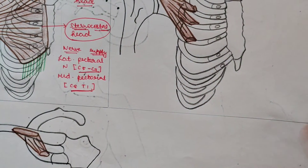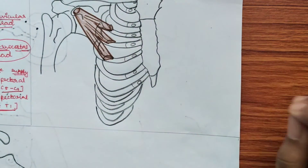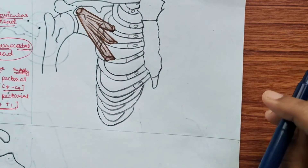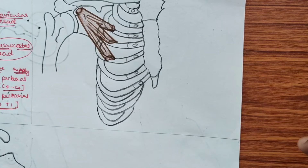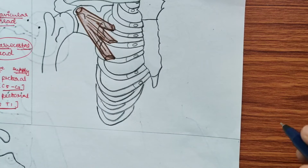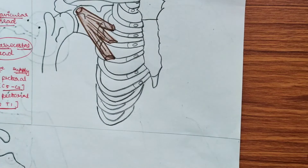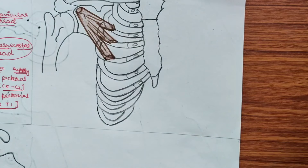Now we'll look at its actions. The first action is protraction — pushing the scapula forward, which is essential for the punching action. It is also helpful in forced inspiration, serving as an accessory muscle for forced inspiration.